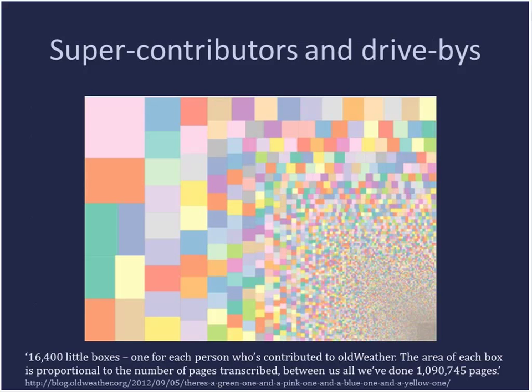We also find huge variations in the number of contributions per person. This graph comes from the Old Weather project — the pink square in the top left represents all the contributions made by one person, while in the bottom right corner are tiny squares, each representing a single page transcribed by one person. Some people do a lot of the work and a lot of people do some of the work. You need to attract both, because you'll never get super contributors unless you first attract people to look at your project.